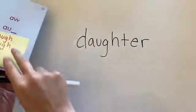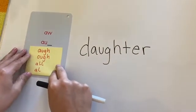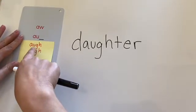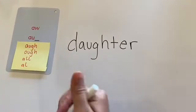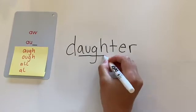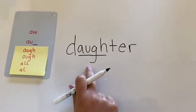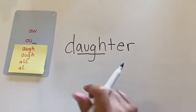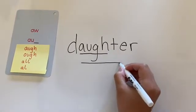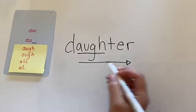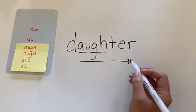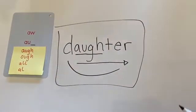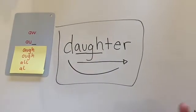Alright. So my first step is to find my spelling pattern. I see here it's one of our unique spelling patterns — A-U-G-H. I know from the video that this makes the aw sound. So I'm going to slide right — aught-er, aught-er — add the beginning sound. Daughter. Say it fast: daughter. My word is daughter. Great job.